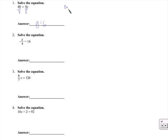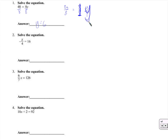Let me show you that we can be sure that happens. I can rewrite 8y over 8 as 8 over 8 times y over 1. If I multiply straight across, 8 times y is 8y, 8 times 1 is 8, and 8 divided by 8 is 1, y divided by 1 is y, and 1 times y is y.